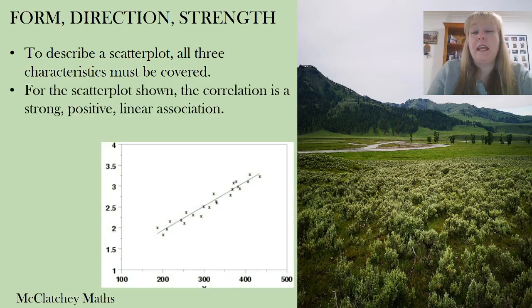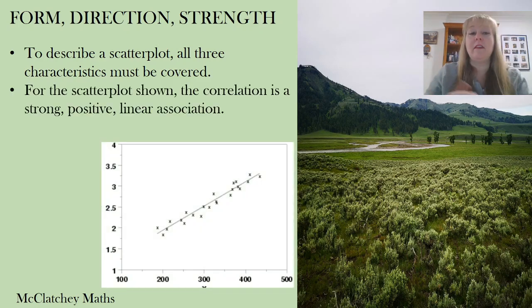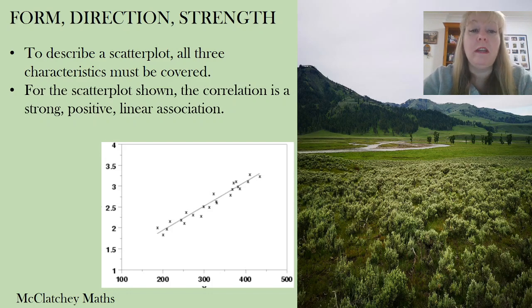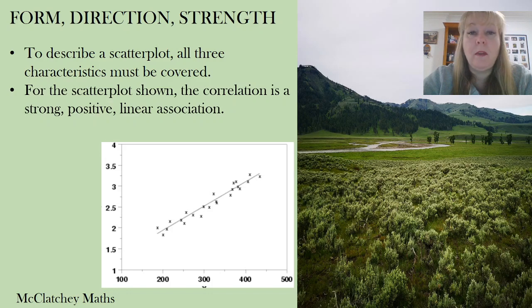For example: 'The scatter plot shown has a direction that is positive, the form is linear, and the strength is weak.' Or for another example: 'Strong, positive, linear association.' Notice I didn't write a great big story — we don't need to write a story when describing scatter plots.